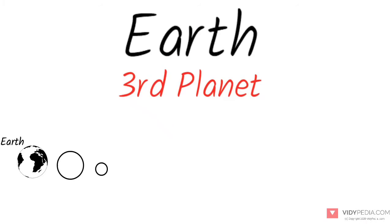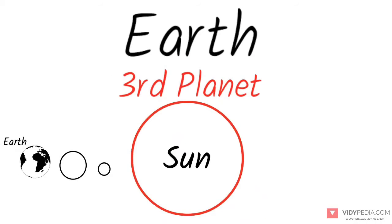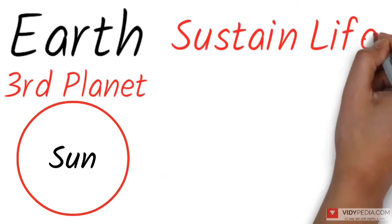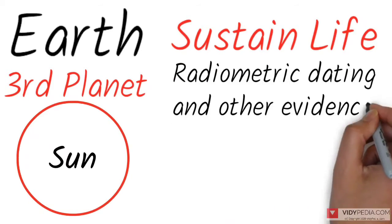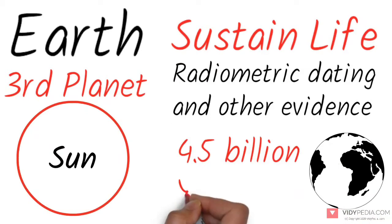Earth is the third planet from the Sun and the only astronomical object currently known to sustain life. According to radiometric dating and other evidence, Earth formed about 4.5 billion years ago.